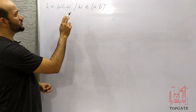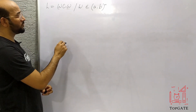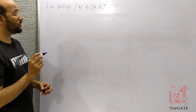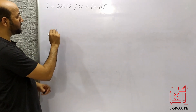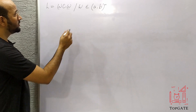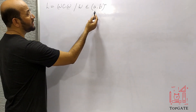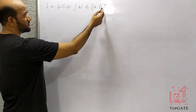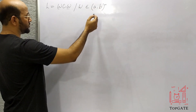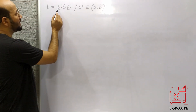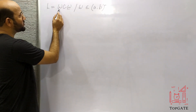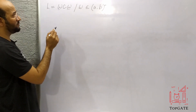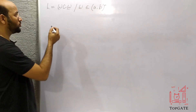Before designing the Turing machine for this language, I will first try to make you understand what kind of strings are possible in this language. W is a combination of A and B including null — this is called the Kleene closure. So in W I can have any combination of A and B, and we can even have null also.